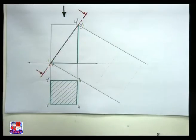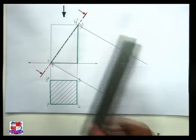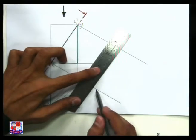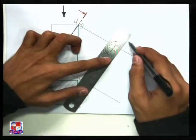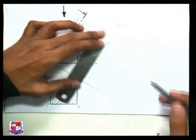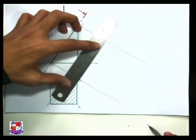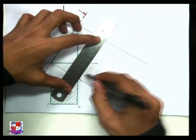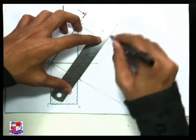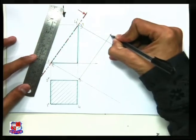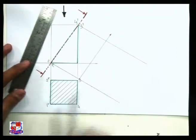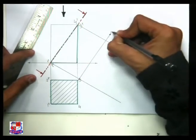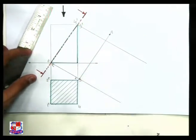Now draw a reference plane anywhere to the right side of or on any side of this cutting plane — this is called the reference plane. Draw it somewhere here. Both these lines are parallel to each other. We can name this as x dash y dash.